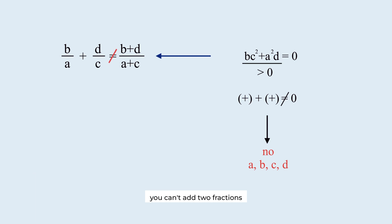In conclusion, you can't add two fractions by simply adding the denominators and numerators together. Even if you don't like it, you have to find a common denominator to add fractions properly.